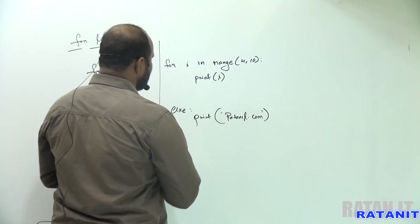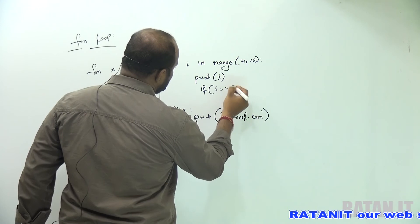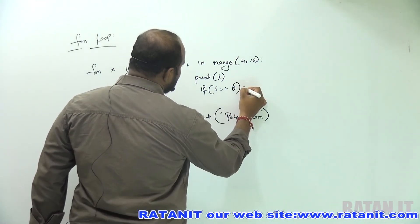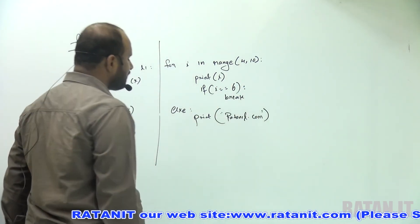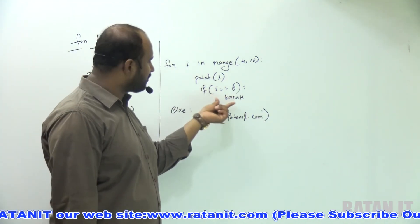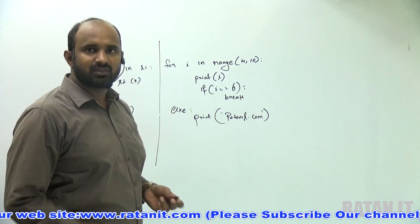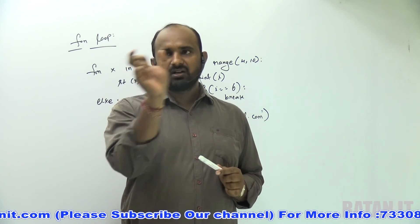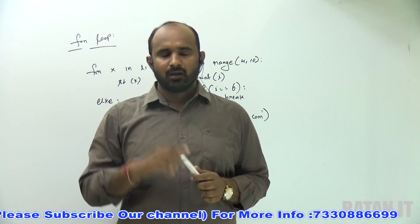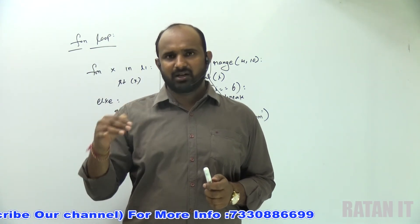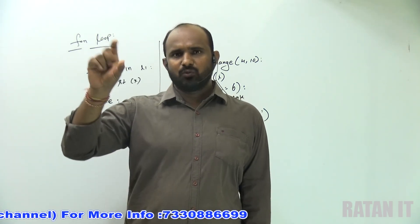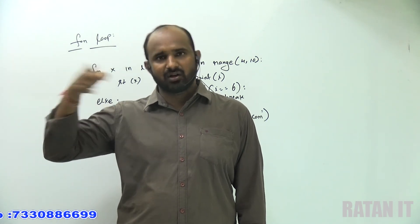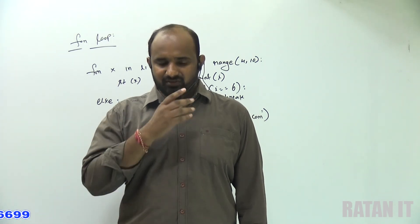The second case: here using an if condition — if i == 6, simply use the break statement. In the for loop, whenever a break statement is used, the loop execution stops. Whenever the loop execution stops due to break, the else block is also not executed in this case. So mainly, in two cases the else block is not executed: when an exception occurs, and when a break statement is encountered.